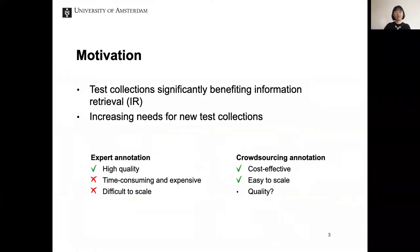Test collections have significantly benefited the development of information retrieval. The quality of relevance labels is key to test collections. Traditionally, expert annotation is used, which can provide high quality labels, but it is time consuming, expensive, and difficult to scale.